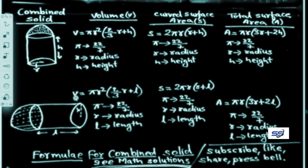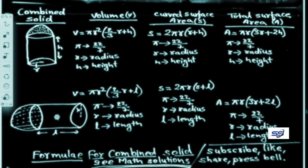If L (length) is given instead of H, we use a different form of the same formulas. Volume: V = πR²(2/3 R + L), where π = 22/7, R is radius, and L is length. Curved surface area: S = 2πR(R + L), where π = 22/7, R is radius, and L is length.